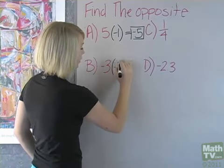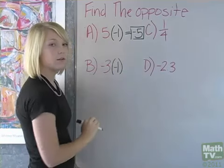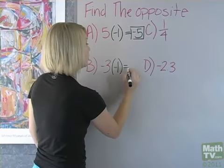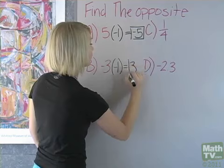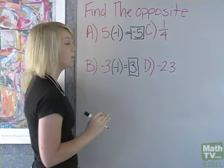Now we're going to multiply our negative 3 by negative 1. A negative and a negative gives us a positive, so we're going to get a positive 3. Negative 3 is the opposite of positive 3.